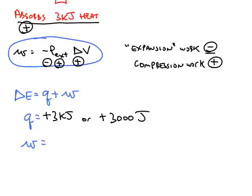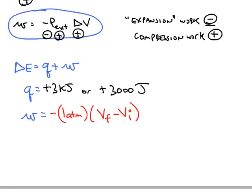The work term we need to calculate with this formula. Negative external pressure was a constant 1 atmosphere. And then we have delta V, which is the final volume minus the initial volume. The final volume in this case was 6.5 liters. The initial was 2.5 liters. So our delta V is a positive 4.